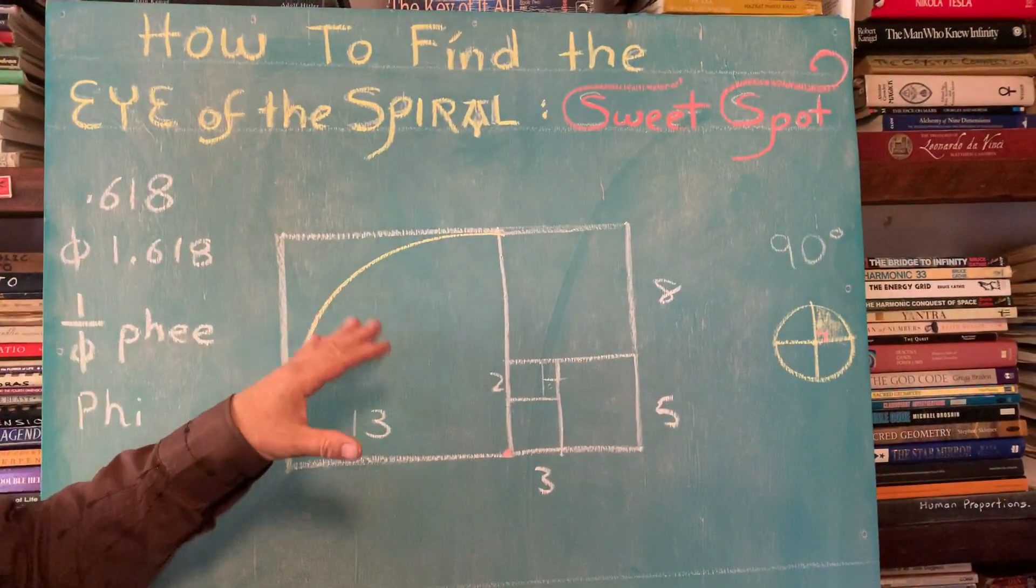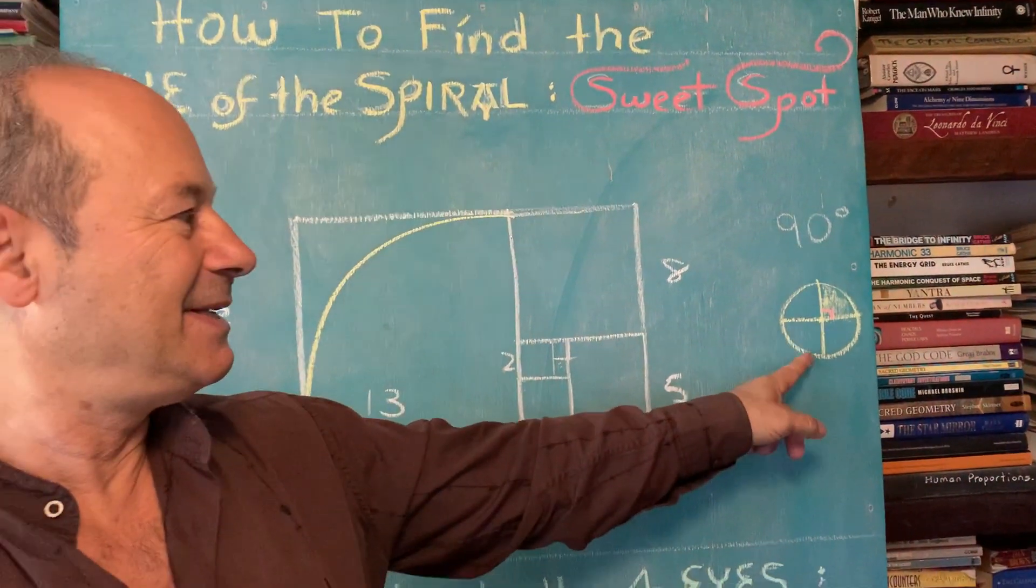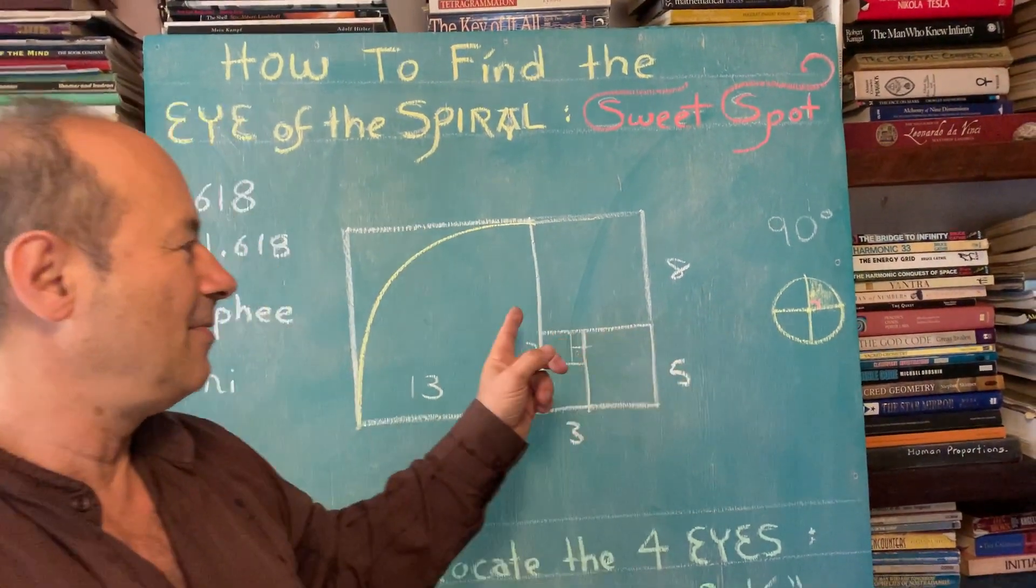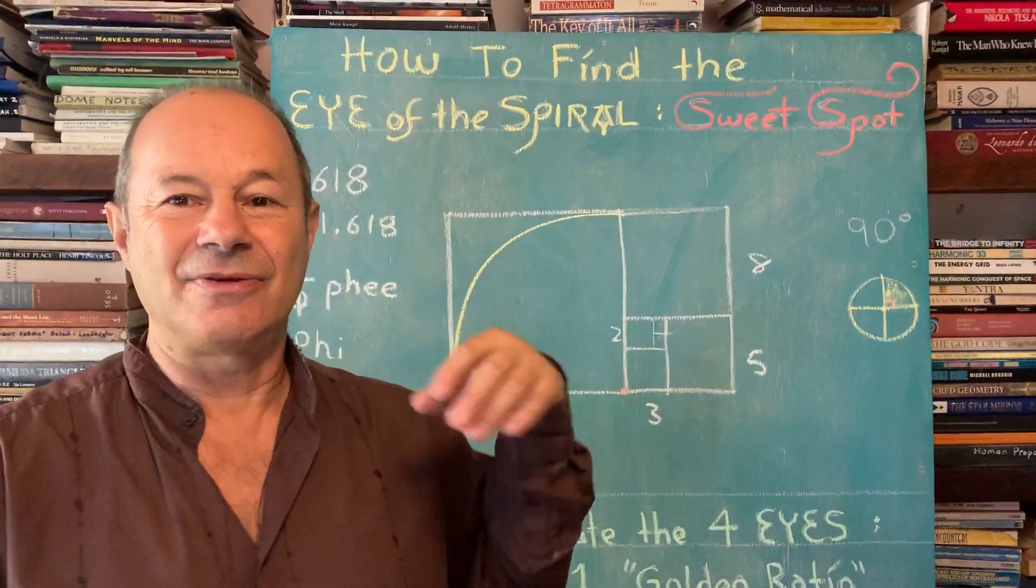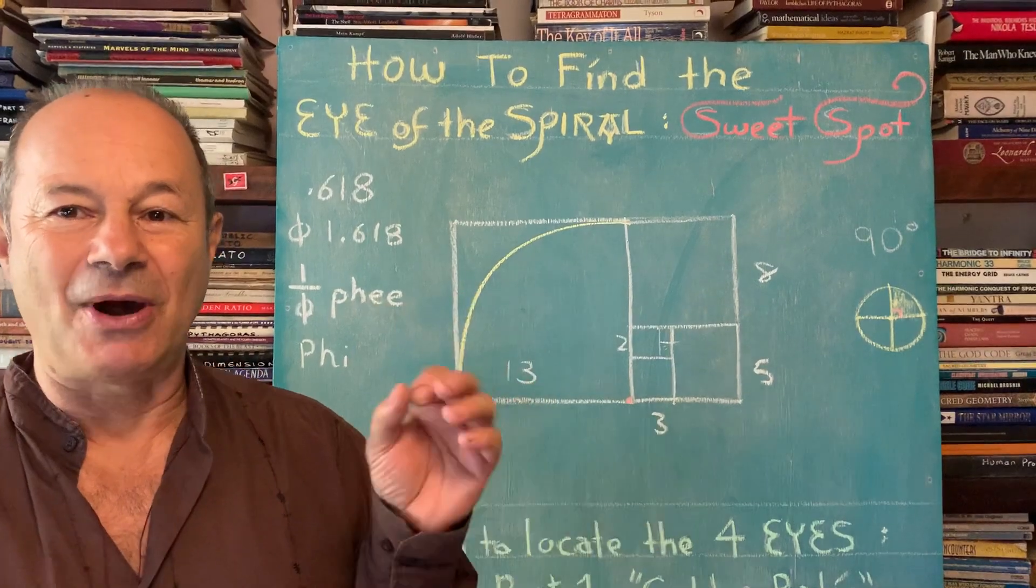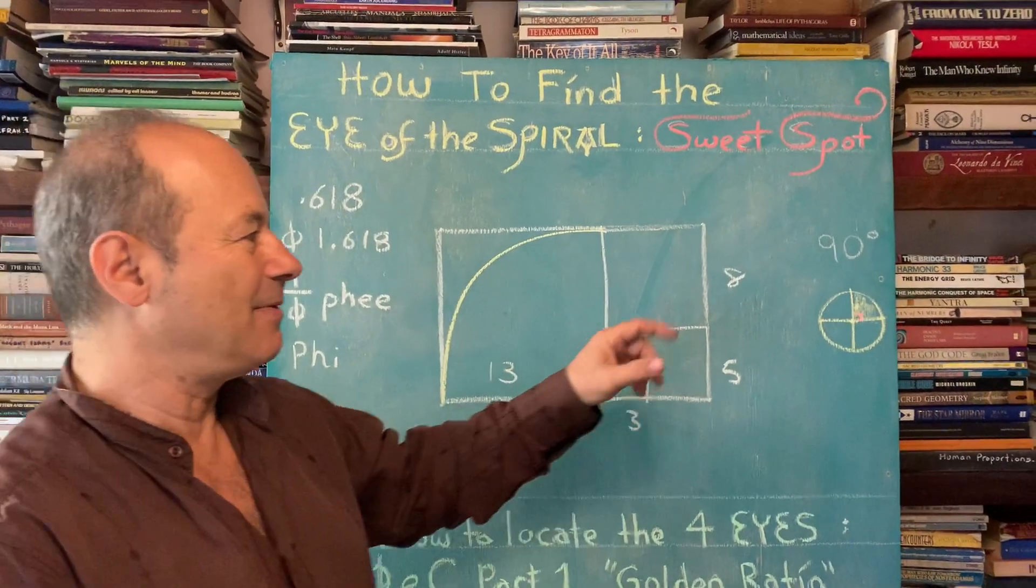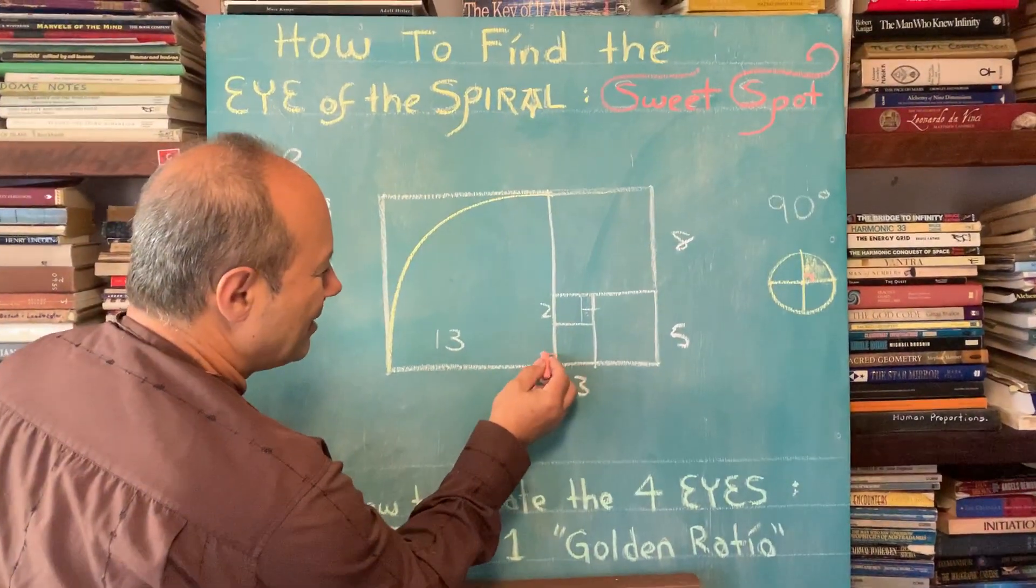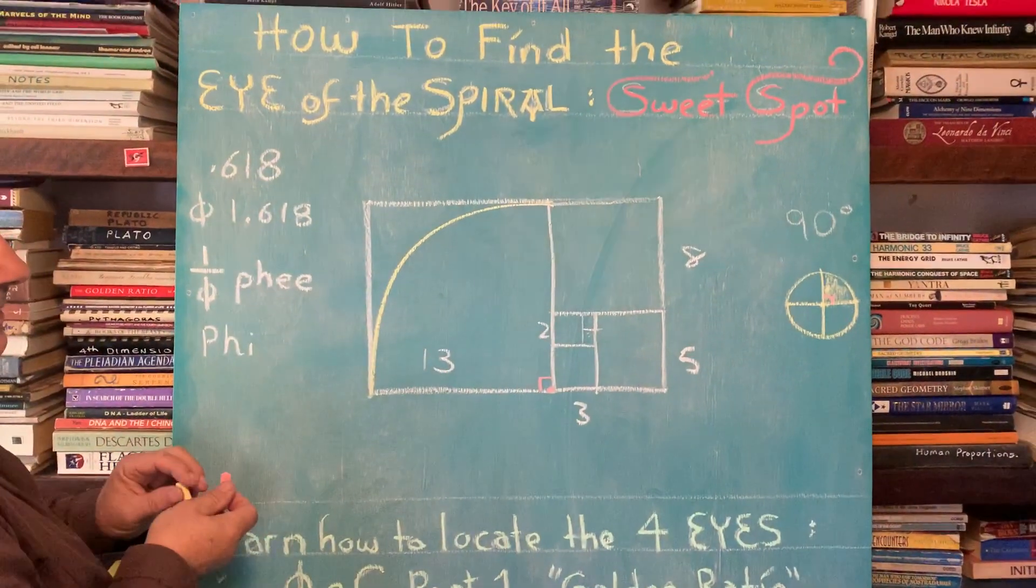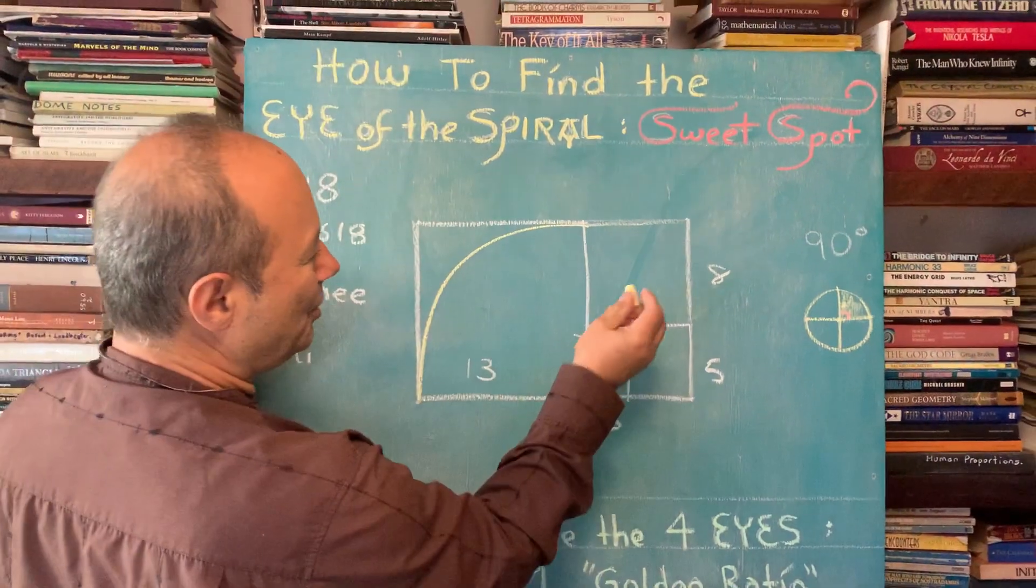Basically what this lesson is about is that without this 90 degree quadration of the circle, the 90 degree is like a wave guide. We can't get the ram's horn, the spiral vorticity happening. So it all goes back to these 90 degree angles. So this is a 90 degree angle here. So we need this. Now we're going to do a smaller 90 degree angle.